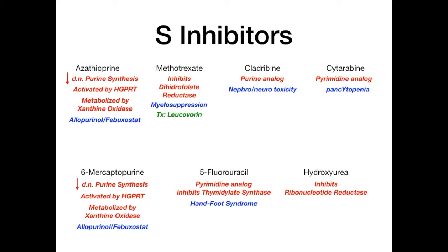There's a clear delineation: the ones ending in '-poside' — teniposide and etoposide — inhibit topoisomerase 2. The ones ending in '-tecan' — topotecan and irinotecan — inhibit topoisomerase 1. The names all contain 'topo,' cueing you that we're talking about topoisomerase. The challenge is remembering which ones inhibit which isomer.